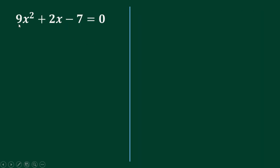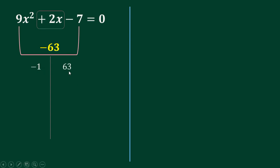For the next example, you multiply 9 and negative 7, so that's negative 63. List all the factors. Since the middle term is positive, the bigger number should be positive: negative 1 times 63, negative 3 times 21, negative 7 times 9. Adding each pair: negative 62, positive 18, positive 2. Since the middle term is positive 2, this is our factor pair: negative 7 and 9.